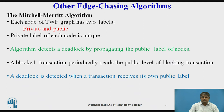When a transaction is blocked, the public and the private label of its node in the wait-for graph are changed to a value greater than their previous values and greater than the public label of the blocking transaction. A blocked transaction periodically reads the public label of the blocking transaction and replaces its own public label with it, provided that the blocking transaction's public label is larger than its own. Deadlock resolution is simple because only one process detects a deadlock, and that process can resolve it by simply aborting itself.